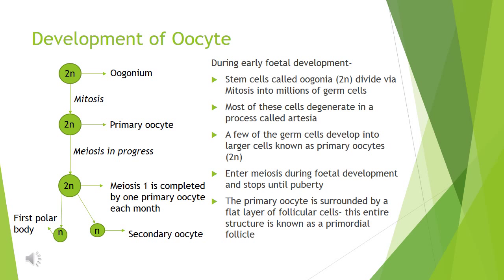During early fetal development, stem cells called oogonia divide via mitosis. A few germ cells develop into primary oocytes, enter meiosis, and stop until puberty. Meiosis is then completed by one primary oocyte each month.